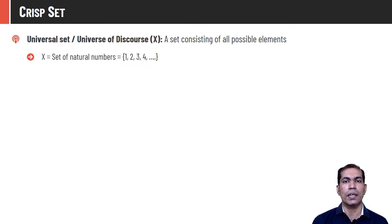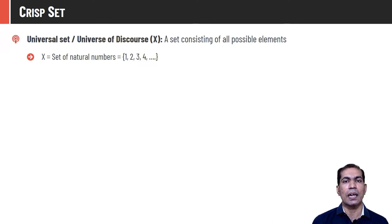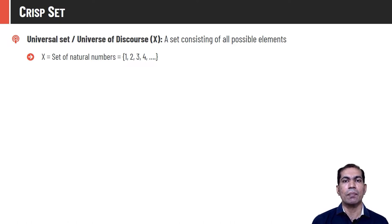If I say A = {1, 2, 3} or {2, 3, 1} or {2, 1, 3}, all correspond to the same set — order is not important in a crisp set. Another property is that elements are distinct. So if A = {1, 1, 2, 2}, B = {1, 2, 2}, and C = {1, 1, 2}, all correspond to the same set because the unique elements in all three are 1 and 2.